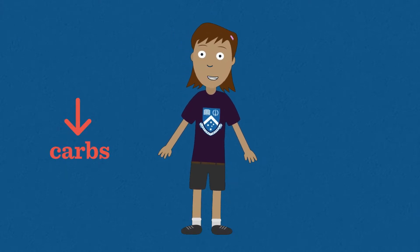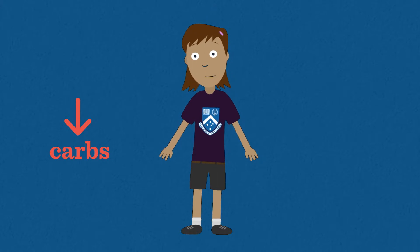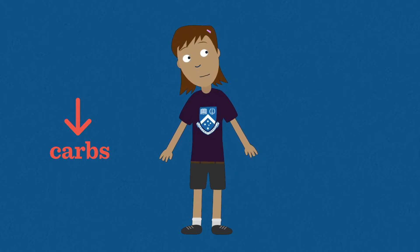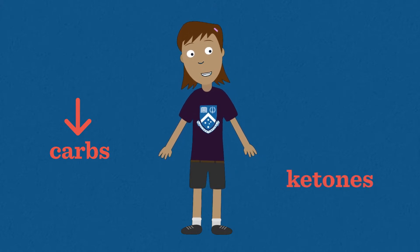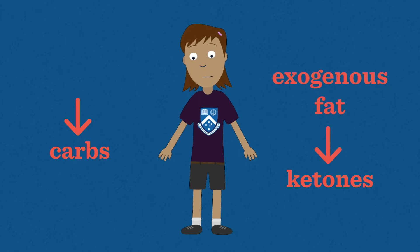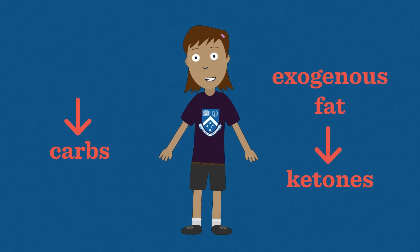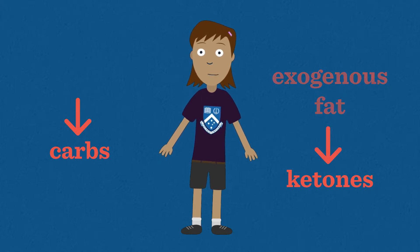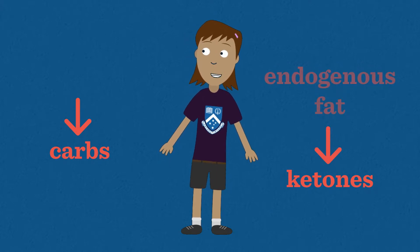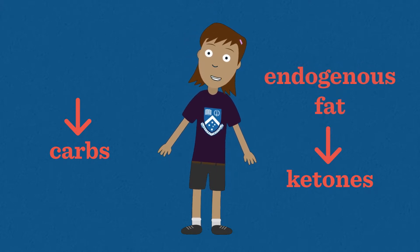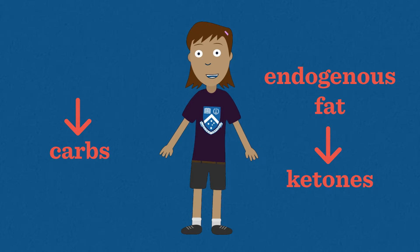When dietary carbohydrates are sufficiently restricted — such as when fasting or on a low carbohydrate diet — the body will start to make ketones using exogenous fat, which is the fat you eat, or endogenous fat, which is the fat stored in your adipose tissue.